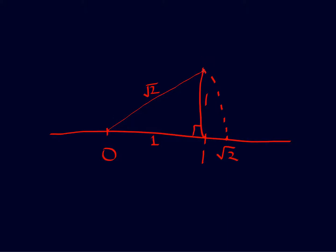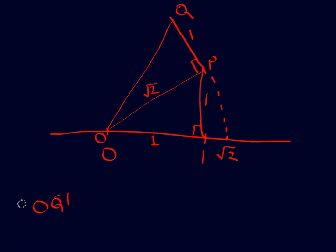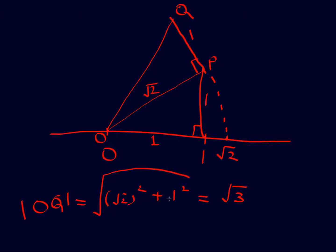Now let's see how to draw square root of 3. We already have the line of length square root of 2. Draw one more perpendicular of length 1 from that point. Let's name the origin O, the tip of the square root of 2 segment as P, and the new point as Q. By Pythagoras' theorem, the length OQ equals the square root of (√2)² + 1², which is square root of 2 + 1, that is square root of 3.